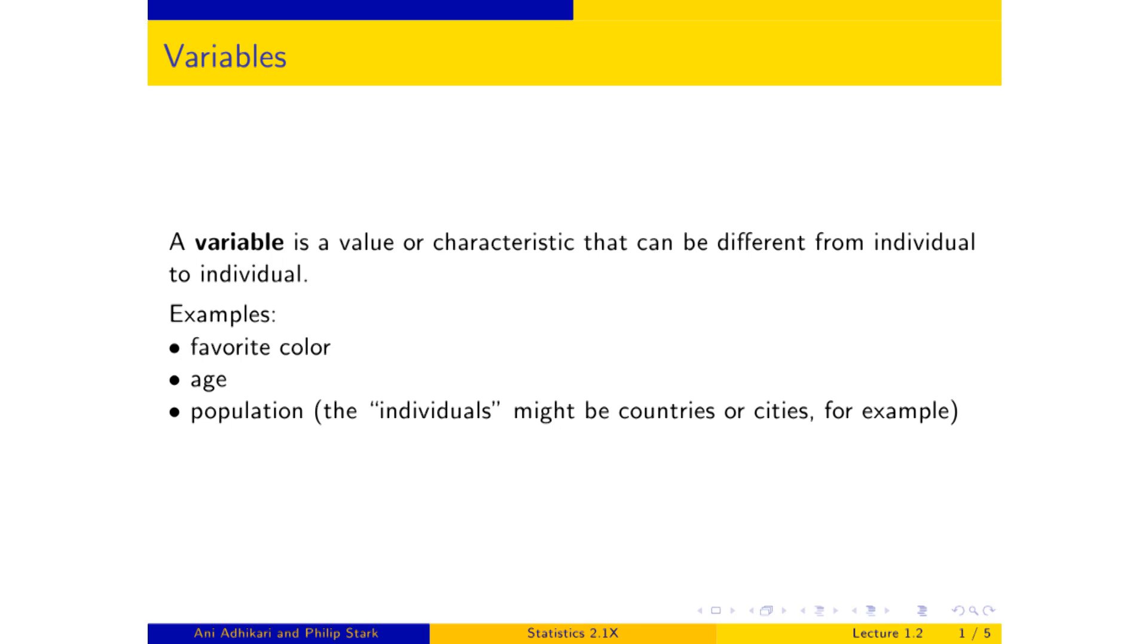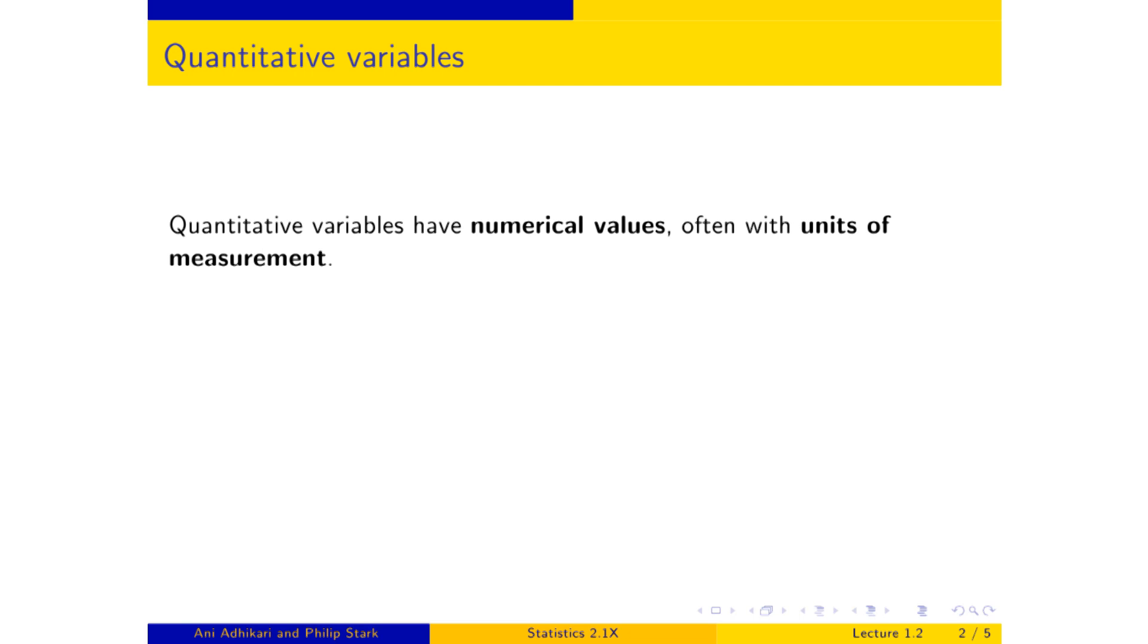The variables are classified in certain natural ways, and sometimes that classification helps make decisions about how you should summarize the variable. So let's look at how variables are classified. The kind of variable we'll most commonly be dealing with is quantitative variables. These have numerical values, numbers, and numbers often come with units of measurement. These variables arise as answers to questions like how much or how many.